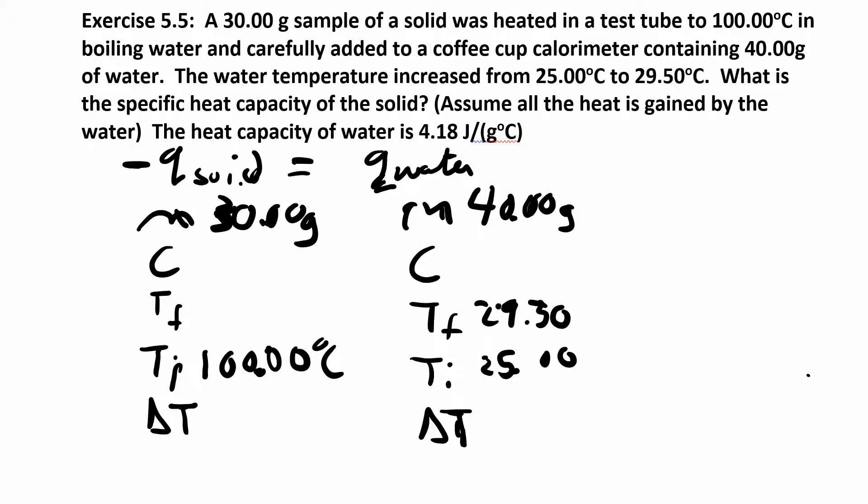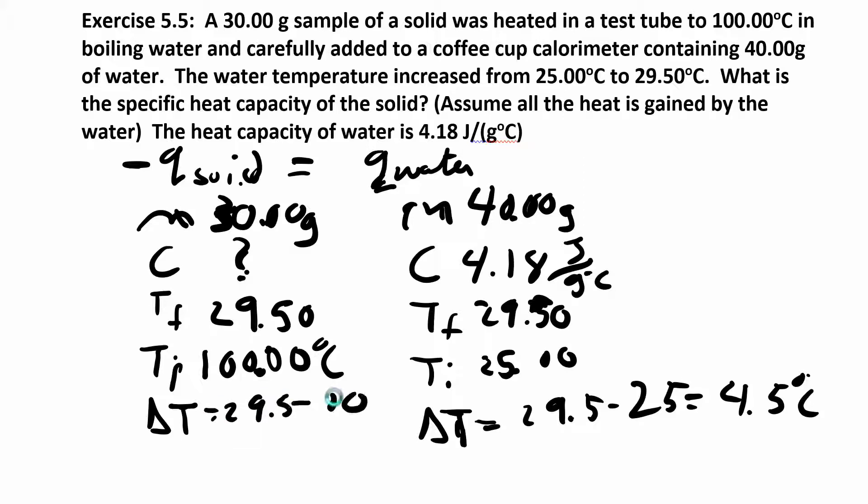We also know that when does the heat stop flowing? When the temperatures are the same. So this is the final temperature of that. My heat capacity for water is 4.18 joules per gram degree C, and I don't know what this is—this is what I'm trying to find. I can find the change in temperature for both. Final minus initial: this is going to be 29.5 minus 25, which is 4.5 degrees celsius. And this one's going to be final 29.5 minus 100, which is negative 70.5 degrees celsius.